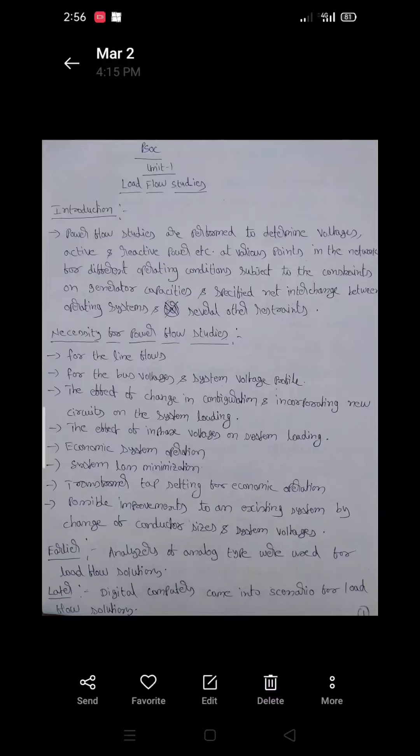These three things will be calculated at various points in the network for different operating conditions. These different operating conditions mean those networks will be subjected to constraints on generator capacities and specified net interchange between operating systems and several other restraints.